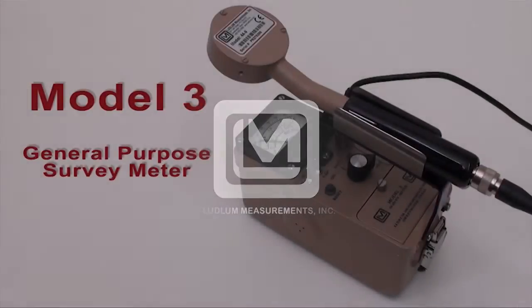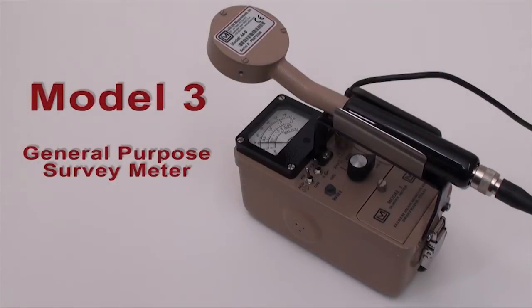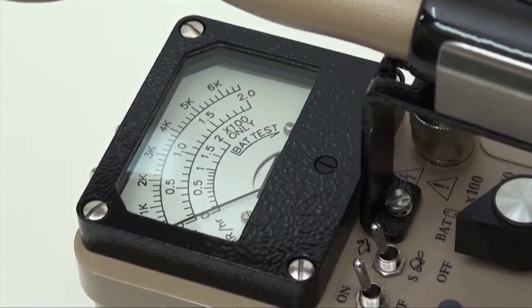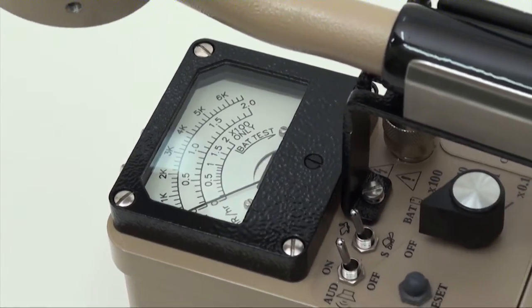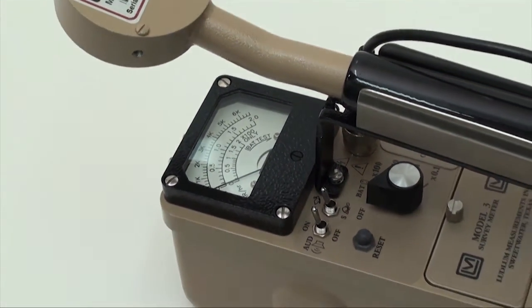The Model 3 is Ludlum's most popular general purpose radiation survey meter. This instrument displays the radiation rate from events sensed by an external detector connected via cable.